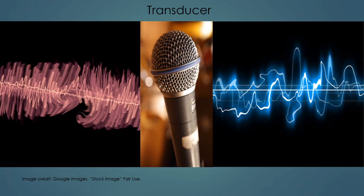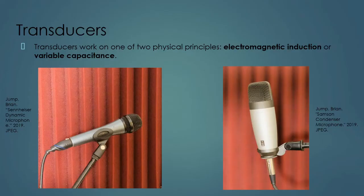Microphones are transducers, which are devices that convert one form of energy into another. In the case of a microphone it's converting mechanical sound energy into electric energy. There are just two ways to do this: a transducer is either operating via electromagnetic induction or variable capacitance. Inside the capsule of a microphone is the transducing element, operating either via electromagnetic induction or variable capacitance.